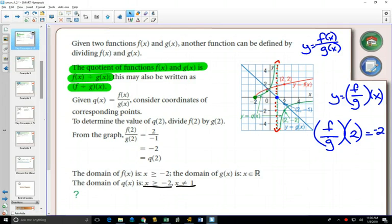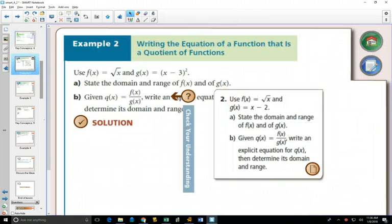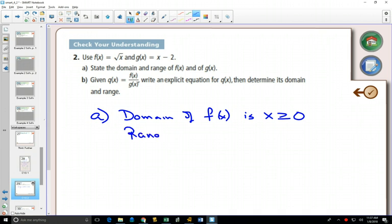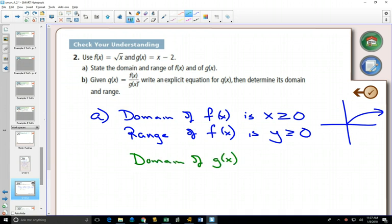So let's look at example 2. f of x is the square root of x, and g of x is x minus 2. Domain and range of both. So the domain of f of x is that x has to be bigger than or equal to 0, because you can't take the square root of a negative. And the range, right, there's a quick little sketch of our square root graph, and we know what that looks like. For g of x, the domain and range is everything.